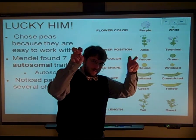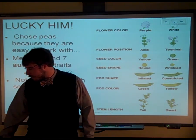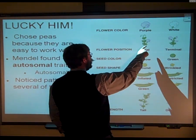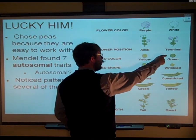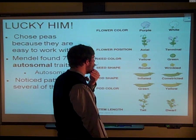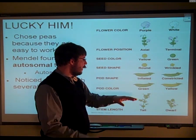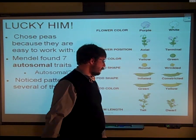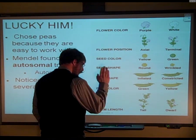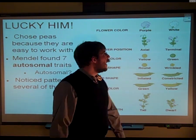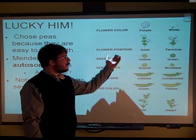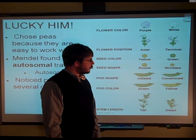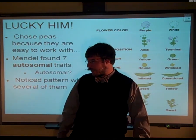He noticed a pattern with autosomal traits. Flower color could be purple or white. Flowers could be axial or terminal. Peas could be yellow or green — and weird that you never see yellow peas, even though yellow is dominant. Seeds could be round or wrinkled. Pea pods could be inflated or constricted. Pods themselves could be green or yellow. And plants could be tall or dwarf. All the traits on the left-hand side are the dominant traits.